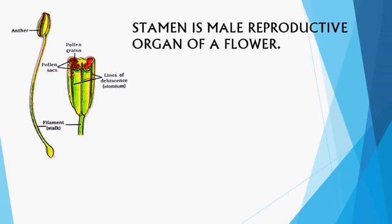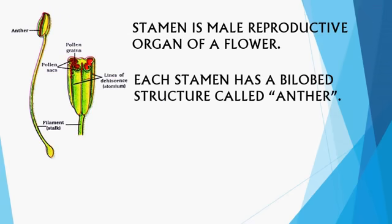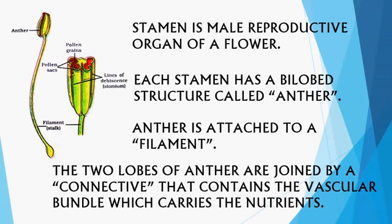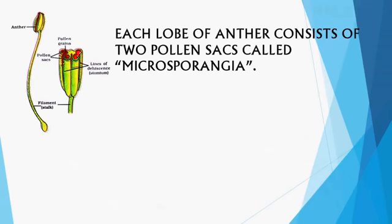Stamen is the male reproductive organ of a flower. Each stamen has a bilobed structure called anther, which is attached to a filament. The two lobes of the anther are joined by a connective that contains the vascular bundle — xylem and phloem — which carries nutrients to the anther lobes. Each lobe of the anther consists of two pollen sacs called microsporangia.